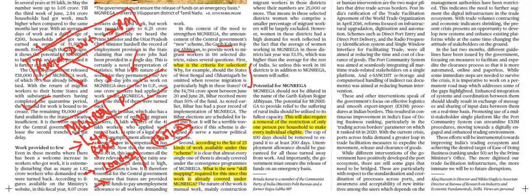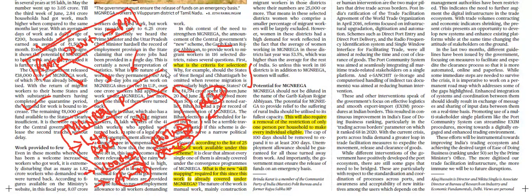MgNREGA is a scheme that works throughout the year, but Garib Kalyan Rojgaar Abhiyan is a one-time scheme amid COVID-19. You can use this in the context of situational leadership - it has a sunset clause sort of thing. Also, MgNREGA comes under the Ministry of Rural Development, but this scheme is a combination of 12 ministries and departments.